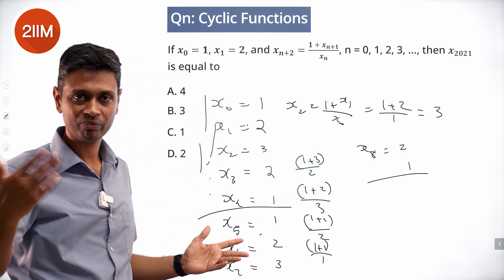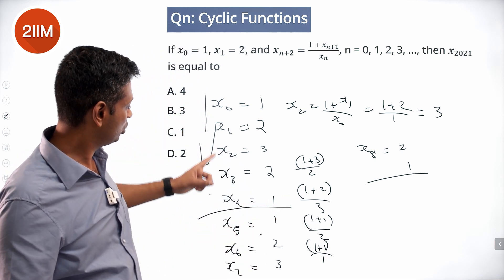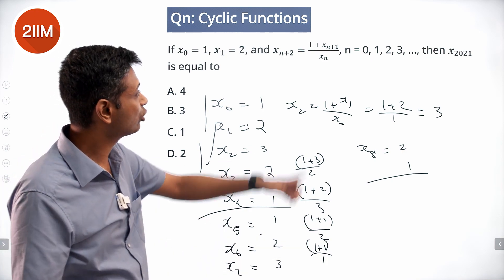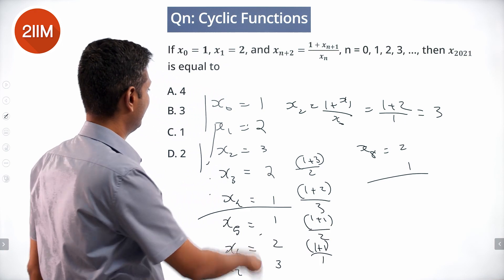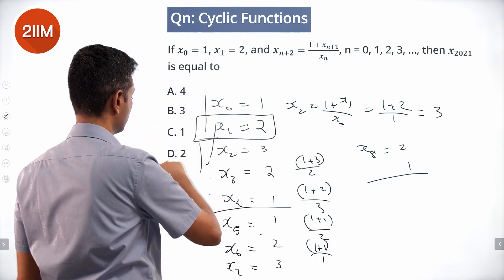So x₀, x₁, x₂, x₃, x₄, then x₅, x₆, x₇, x₈, and so on. x₂₀₂₁ leaves remainder 1 on division by 5, so now it should be here, the second step of the cycle, and it is 2.